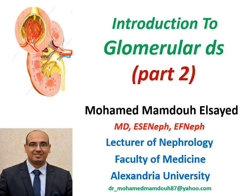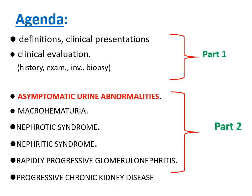Good evening everyone. Today we continue our discussion about comprehensive clinical nephrology. In part one we covered introduction to glomerular diseases, including clinical approach, presentation, history, examination, investigation, and biopsy. Today we will discuss in detail the different clinical presentations — asymptomatic urinary abnormality, macro hematuria, nephrotic, nephritic, RPGN, or CKD.